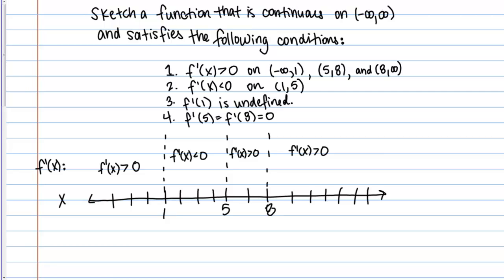I'm just breaking down this information and putting it on the number line — laying it all out before interpreting it. F prime of 1 is undefined, so I'll note 'undefined' at that point. F prime of 5 equals 0, and F prime of 8 equals 0.